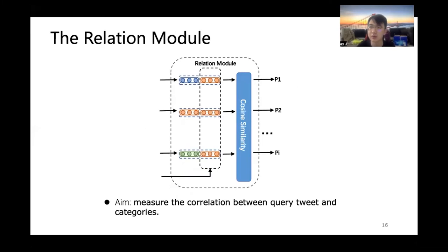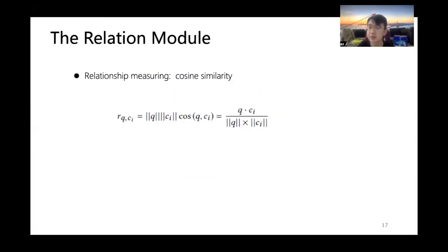The aim of relation module is to measure the correlation between query and categories. Specifically, cosine similarity is adopted to calculate the relation score. The relation score close to one means extremely similar.